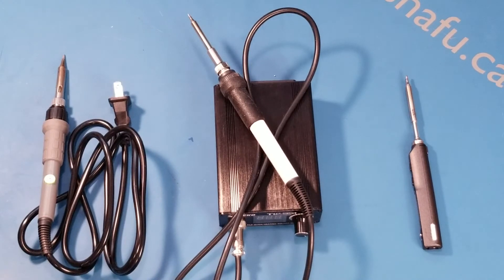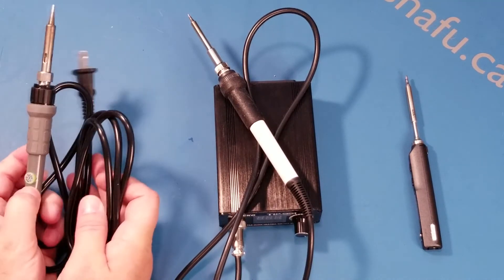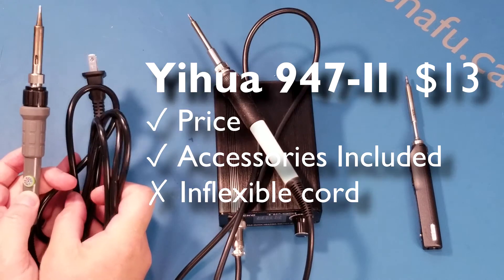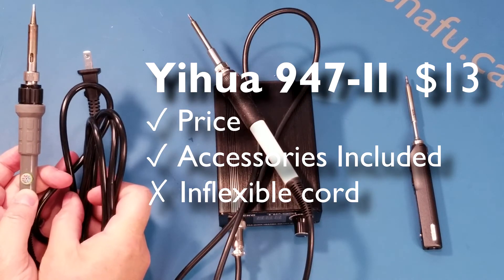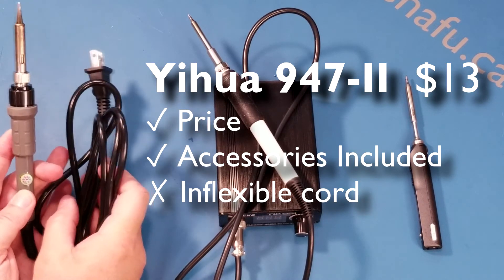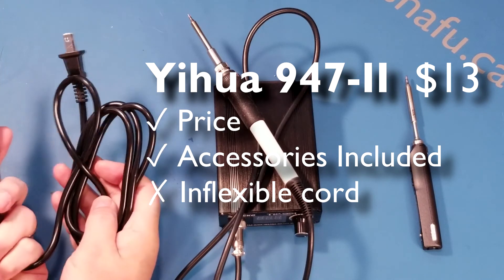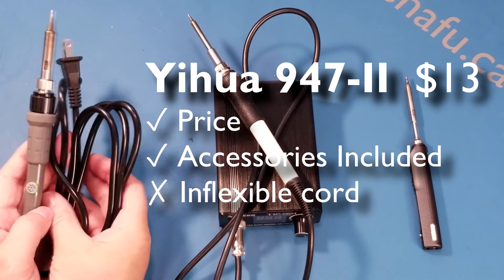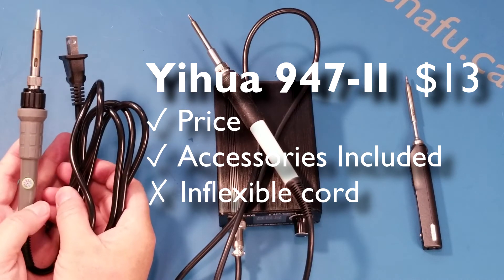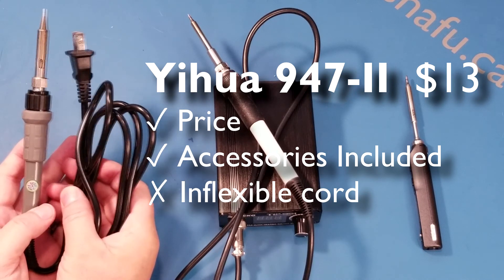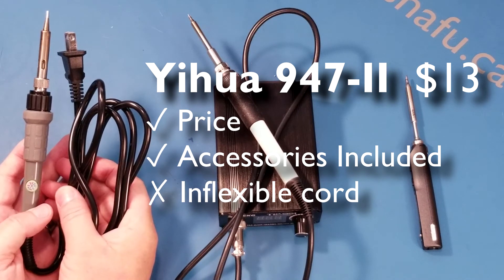Let's sum up for these three irons. For the Yiwa 947, what do I like about it? Well, the price is the best thing to like about this. At $13, it's a steal. It's relatively comfortable in the hand. Downside to it, the cord isn't that flexible. The stand that comes with it is a bit floppy. However, it's the only one that even came with a stand. Really, really good value if you were just getting started.